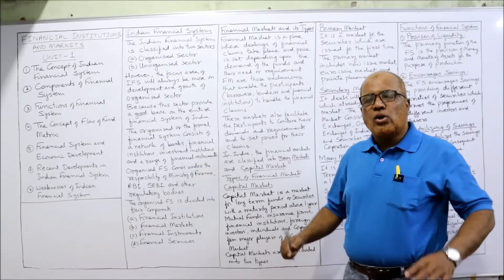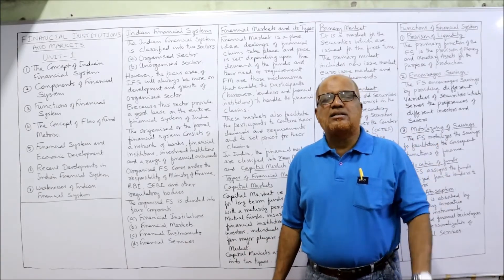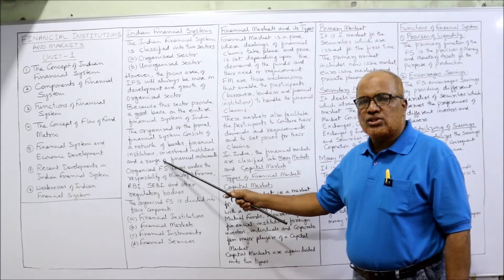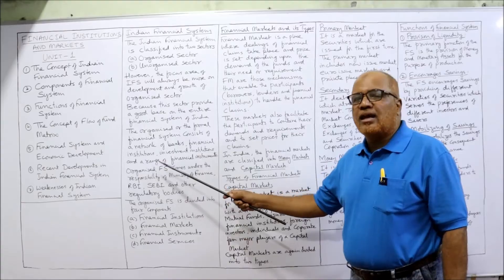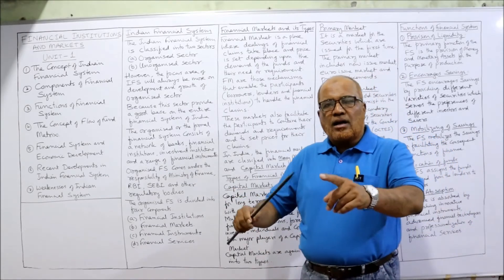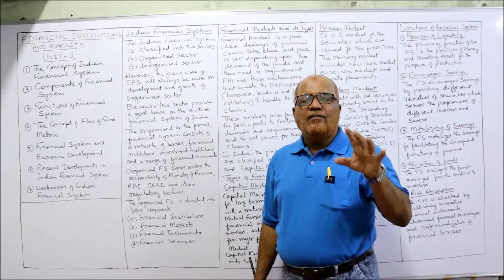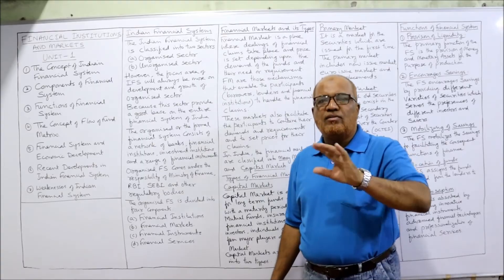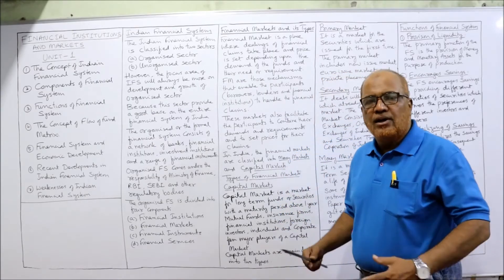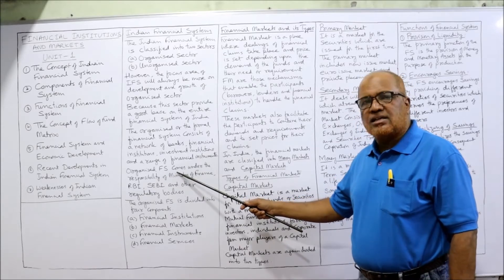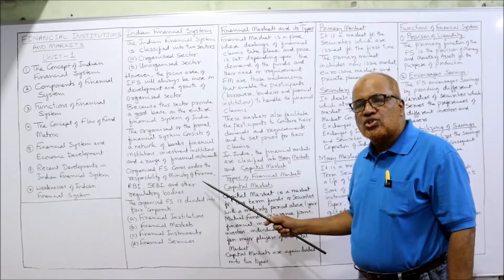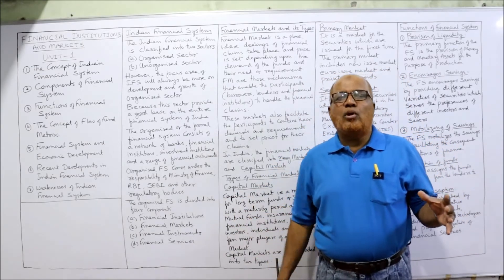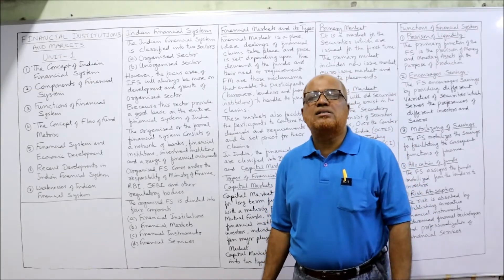The organized or formal financial sector consists of a network of banks, financial institutions, investment institutions, and a range of financial instruments. It is a complete system. The organized financial system comes under the responsibility of the Ministry of Finance, RBI, SEBI, and other regulatory bodies, which regulate the organized sector in India.